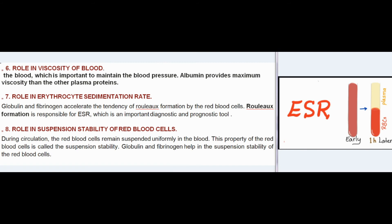(6) Role in viscosity of blood: Blood viscosity is important to maintain blood pressure; albumin provides maximum viscosity among plasma proteins. (7) Role in erythrocyte sedimentation rate (ESR): Globulin and fibrinogen accelerate rouleau formation by red blood cells, which is responsible for ESR — an important diagnostic and prognostic tool. (8) Role in suspension stability of red blood cells: Red blood cells remain uniformly suspended in blood during circulation; globulin and fibrinogen help maintain this suspension stability.